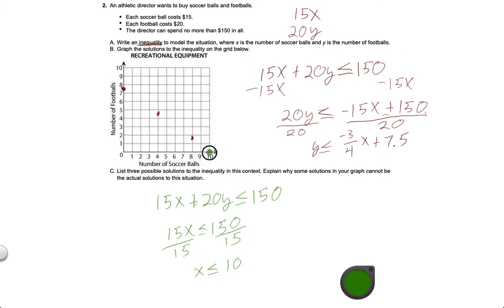So, if I only buy soccer balls, this is where I'm going to be. No footballs. So, I don't have a Y component. I only have soccer balls. I bought 10 soccer balls. And then go to the other extreme.